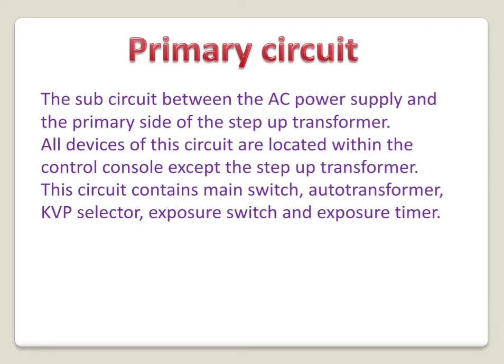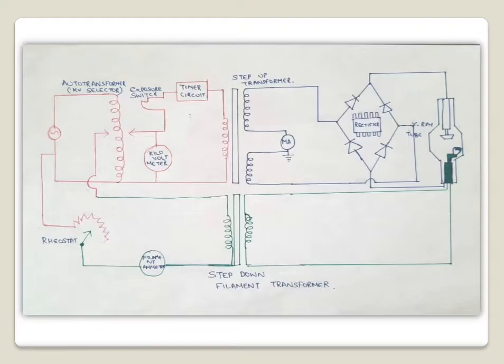In the primary circuit you will find devices such as the main switch, the auto transformer, KVP selector, exposure switch, and exposure timer. All these parts are present inside the operating console, except the primary coil of the step-up transformer which is present outside the operating console. So the primary circuit extends between the source of alternating current up to the primary coil of the step-up transformer.